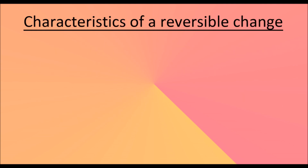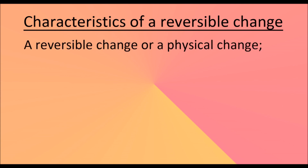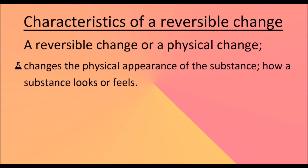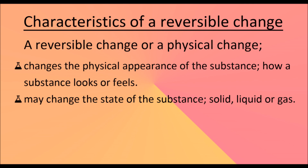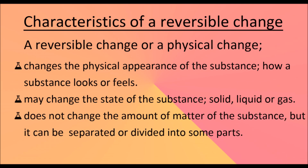Characteristics of a reversible change: A reversible change or physical change changes the physical appearance of a substance, such as how it looks or feels. It may change the state of the substance, such as solid, liquid, or gas. It does not change the amount of matter in a substance, but it can be separated or divided into parts. It does not form a new material.